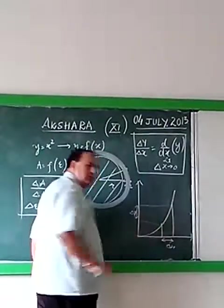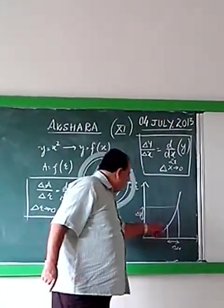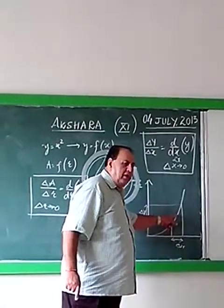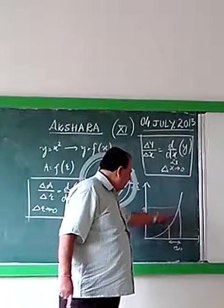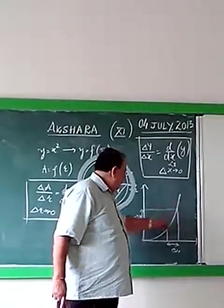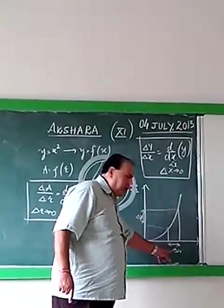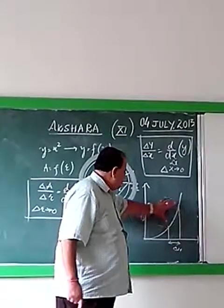The ratio of this divided by this is not a variation because there are so many points. If I want to know what is delta y or delta x, I will bring this point to this or this to this. If I bring this point to this, delta x will become zero and these two points will become one.